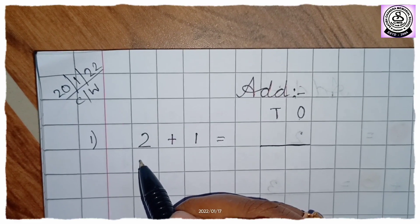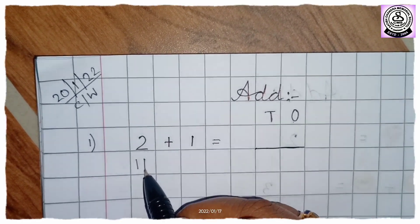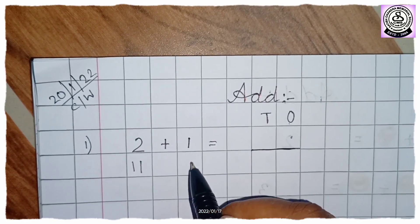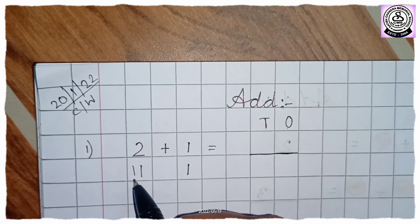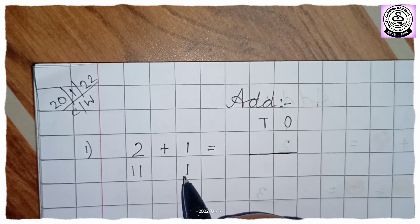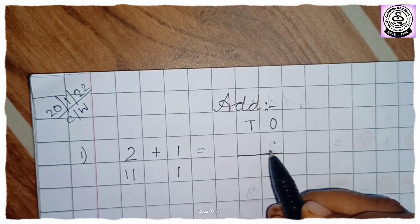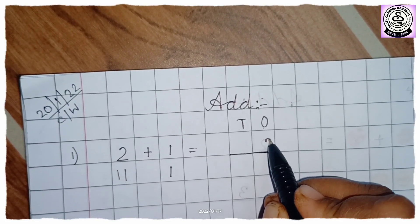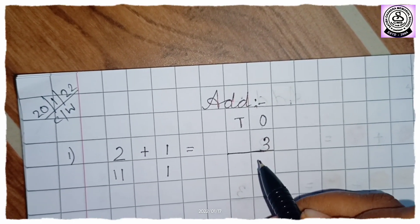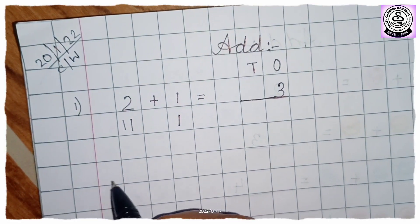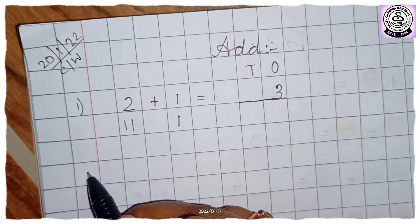So 2 means how many lines will we draw here? 2. 1, 2, 2 lines. 1 means 1 line. So let's count here 2 and 1, 3. So we will write under 1s. Write 3. Now onwards we will write only question and then solve it later on.